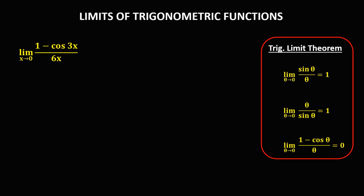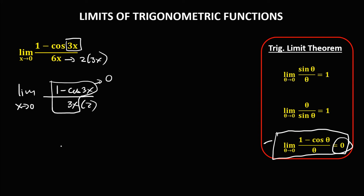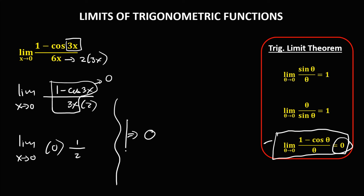For the next given, using the trigonometric limit theorem for the 1 minus cosine form, the given angle is 3x, so we need 3x in the denominator. Since 6x can be factored as 2 times 3x, we have the limit as x approaches 0 of 1 minus cosine 3x over 3x, times 1 over 2. By the theorem, 1 minus cosine 3x over 3x equals 0, so we have 0 times 1 half, which equals 0.